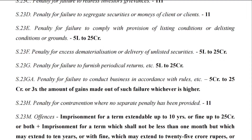This is the latest amended and maximum penalty under this Act — the penalty for failure to conduct business in accordance with rules, etc. Here, the minimum penalty is 5 crore rupees, extendable to a maximum of 25 crore rupees, or three times the amount of gains made out of such failure, whichever is higher.